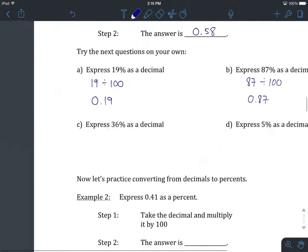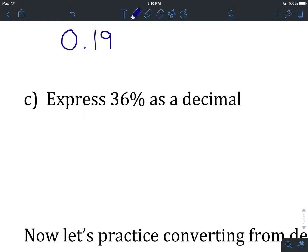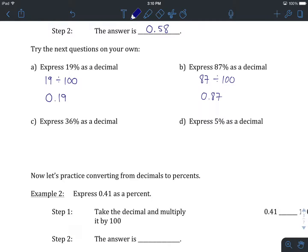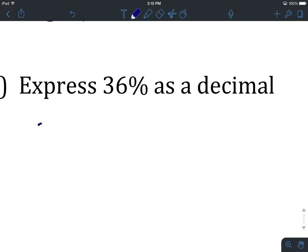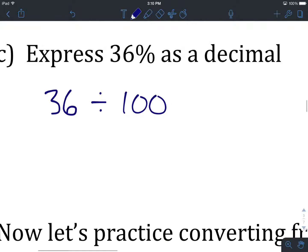Let's try example C. I'd like you to hit pause here and give C and D a try. When you think you've got 36% and 5% both expressed as decimals, come on back and we'll see how you did. Okay, let's have a look at C. 36%, we start by writing the number, 36, divided by 100. That's going to give us, when we type it into our calculator, 0.36. So 36% expressed as a decimal is 0.36.